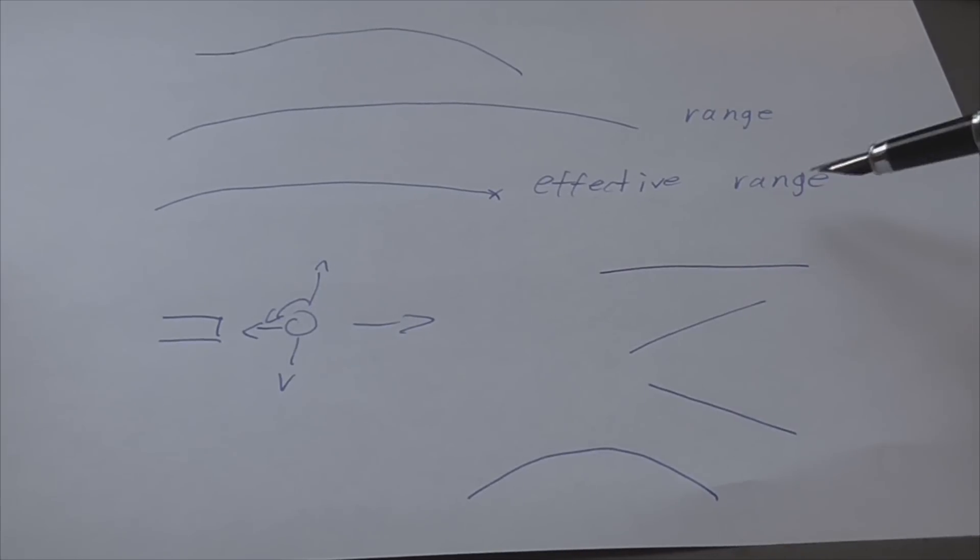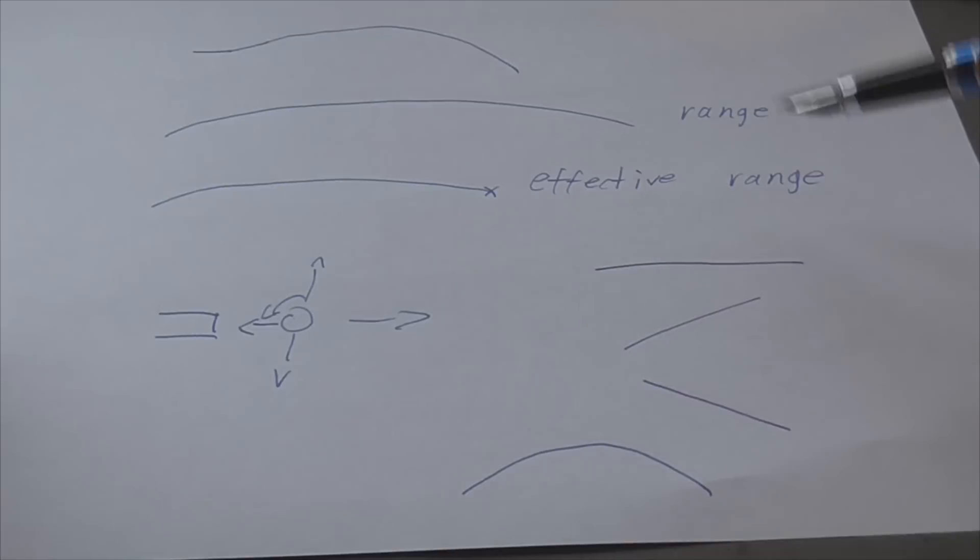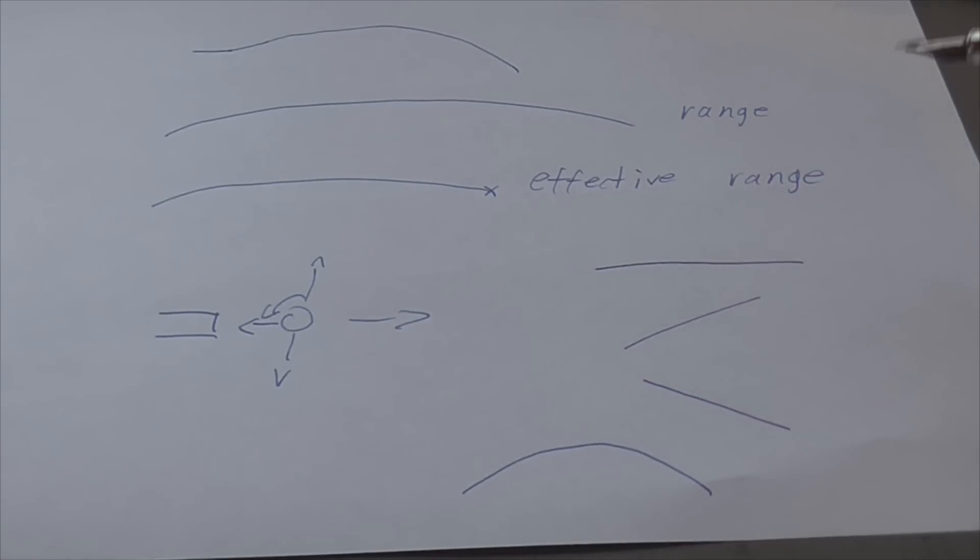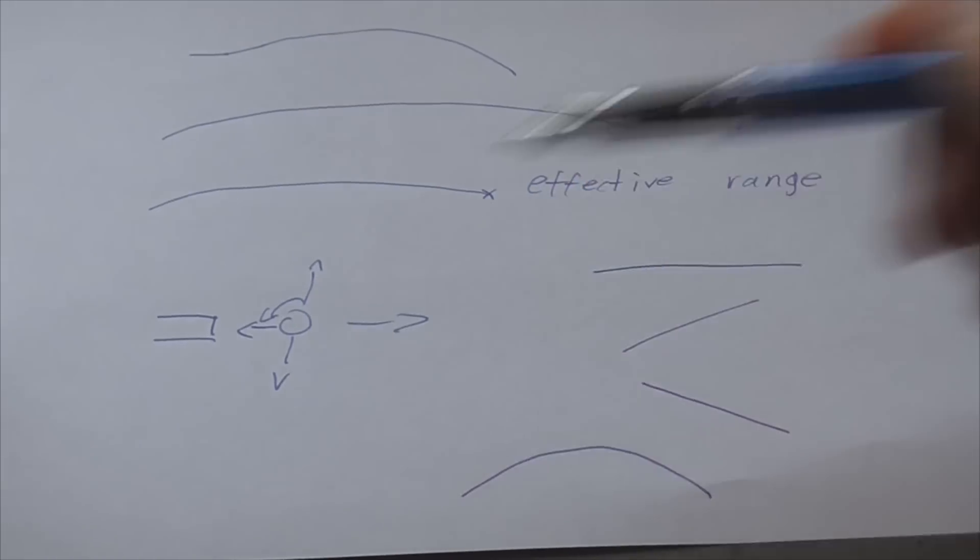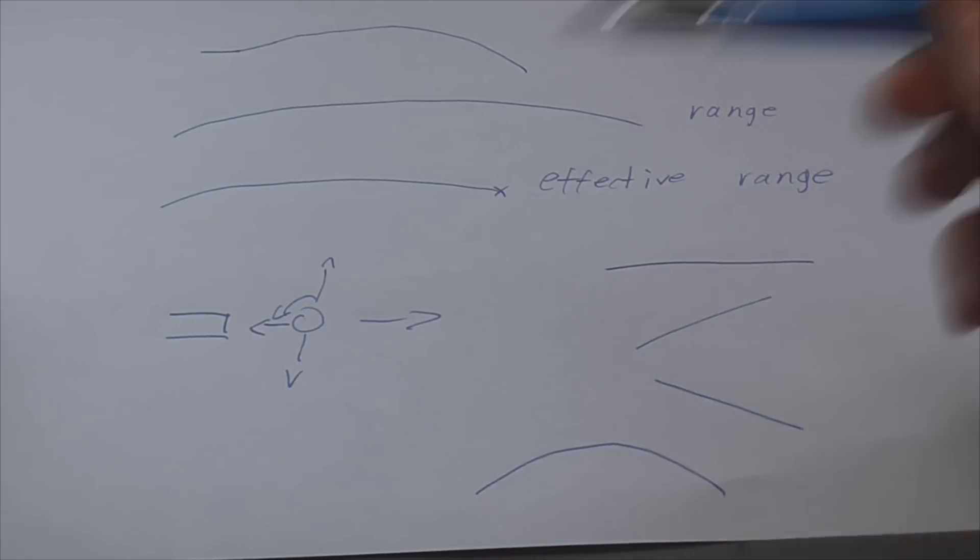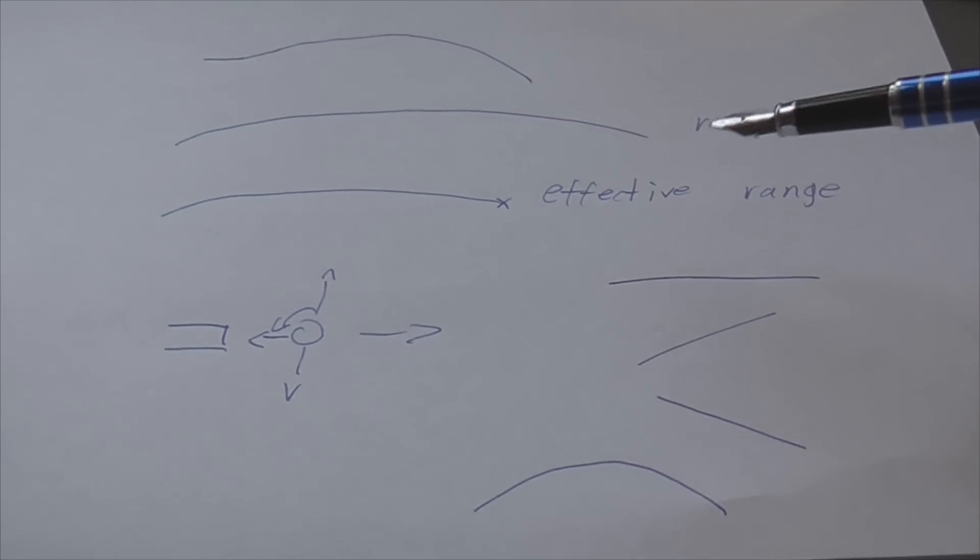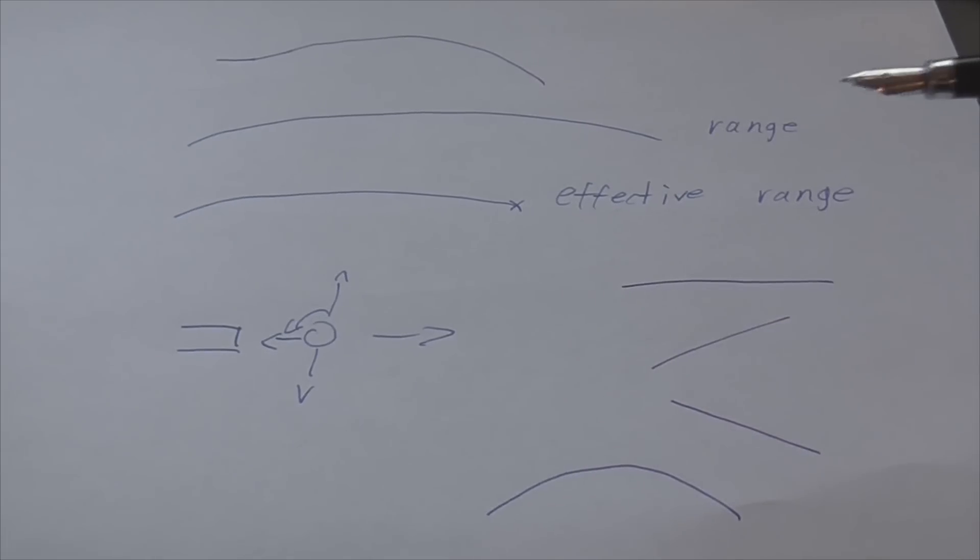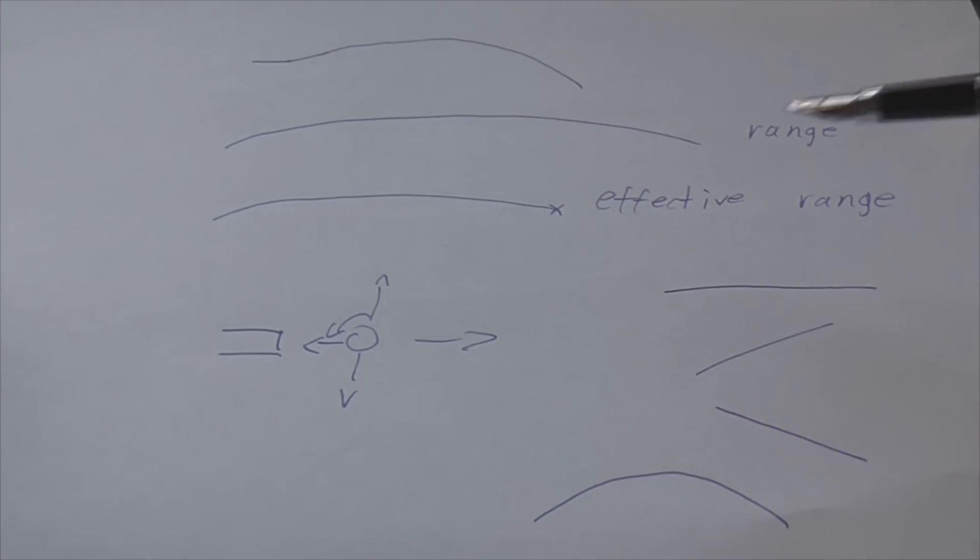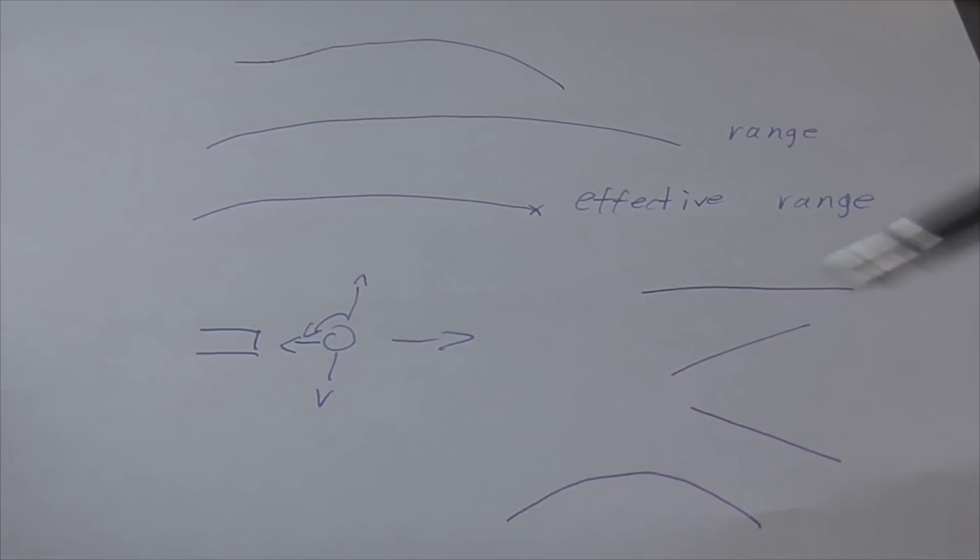But then there is the other thing which is effective range. And the effective range depends on the actual range and your accuracy. So it is the range at which you can say hit a man-sized target 9 out of 10 times. And an R-hop does improve effective range even if you don't switch to heavier BBs. Because an R-hop when installed properly is very accurate, very consistent. And accuracy plays a huge role in your effective range. So installing an R-hop is going to improve your effective range. But then again you could also get a Maple Leaf or a flat hop which does something very similar, and it is going to provide a similar degree of accuracy. So you don't need an R-hop for range per se, but it will work, obviously.